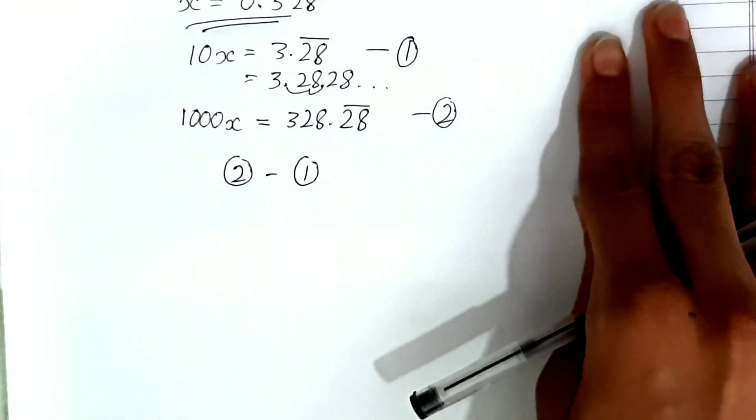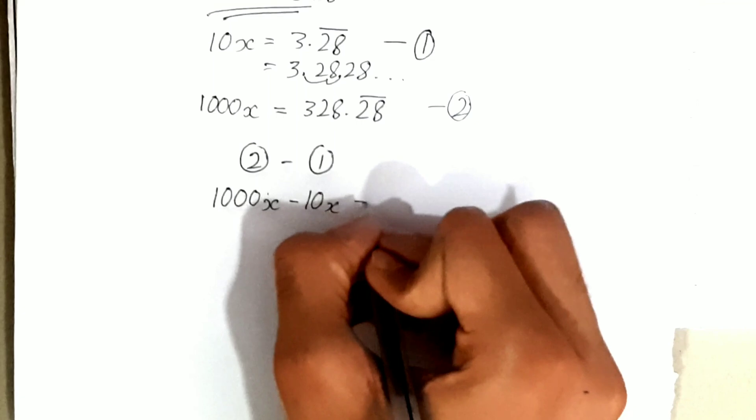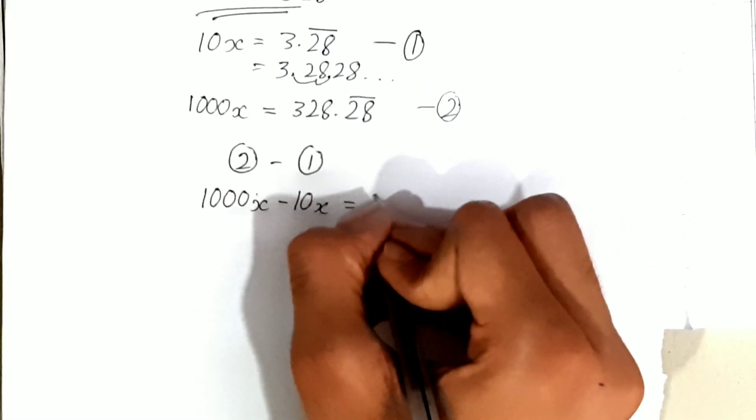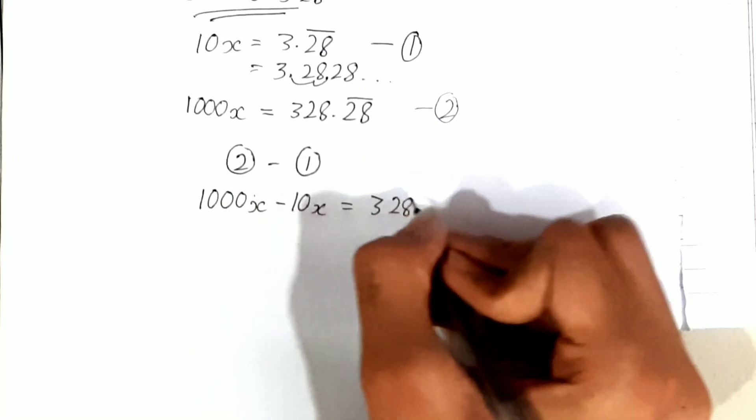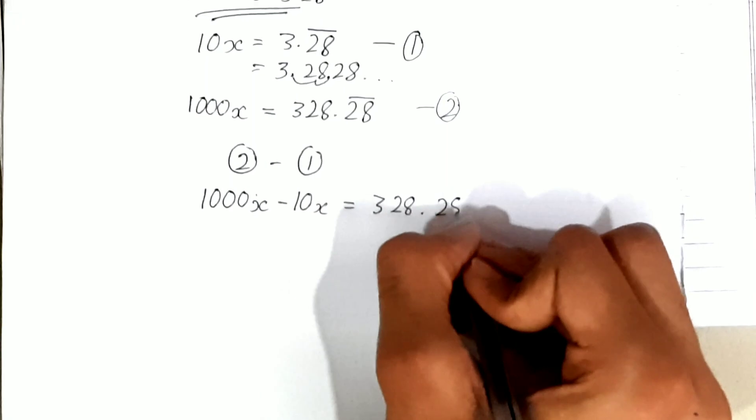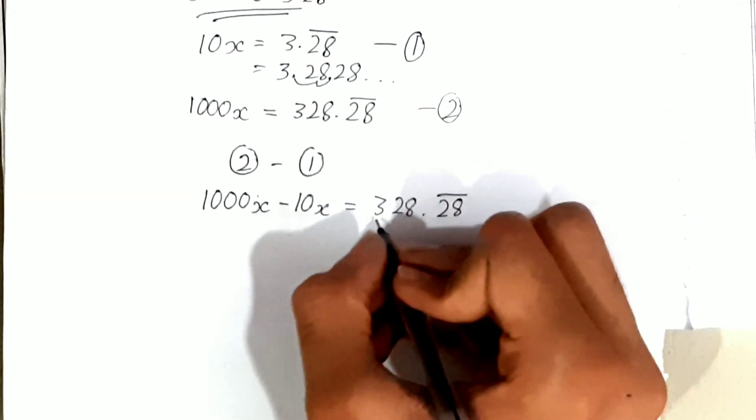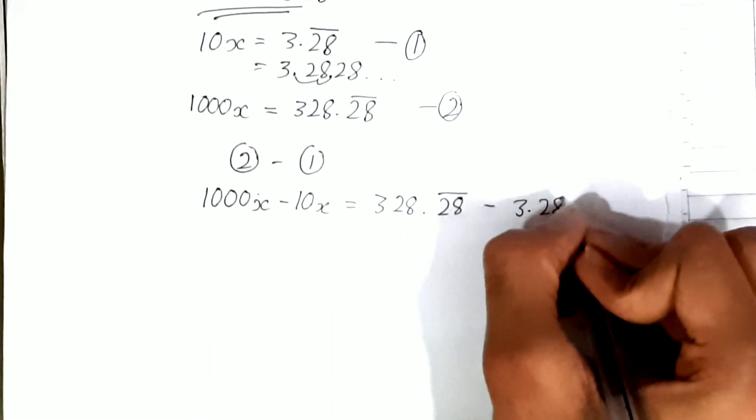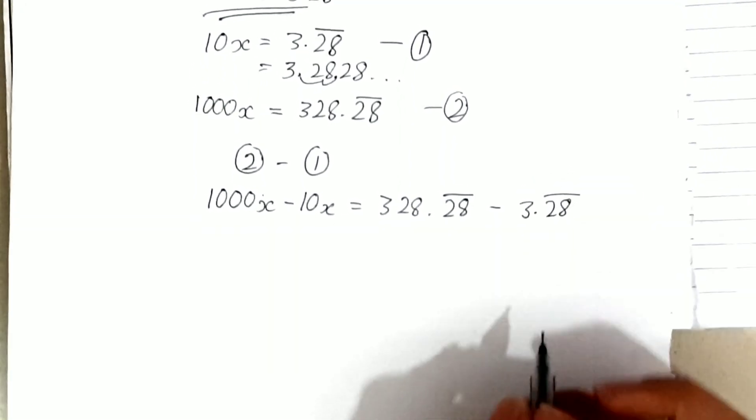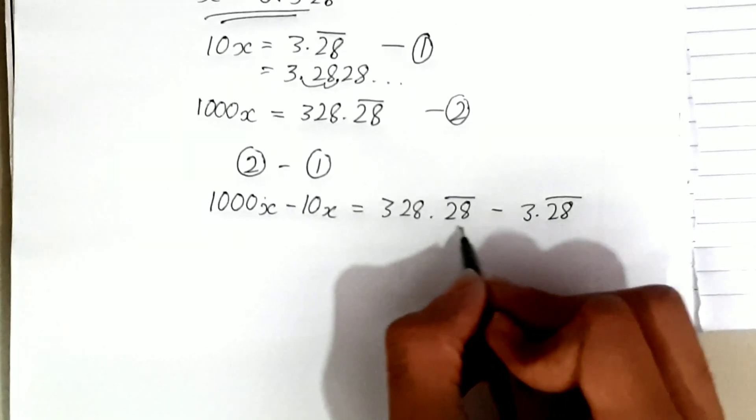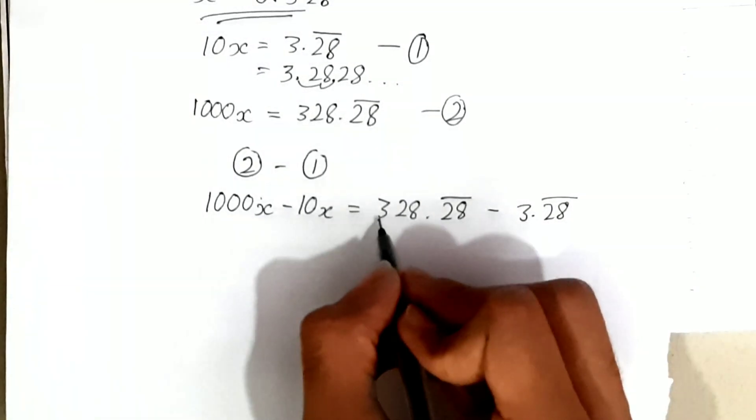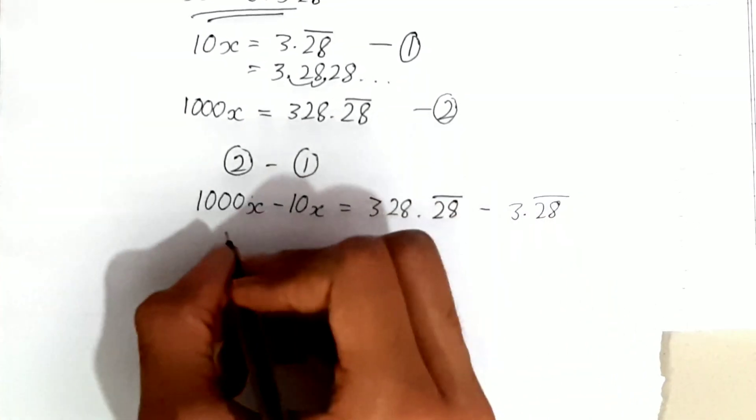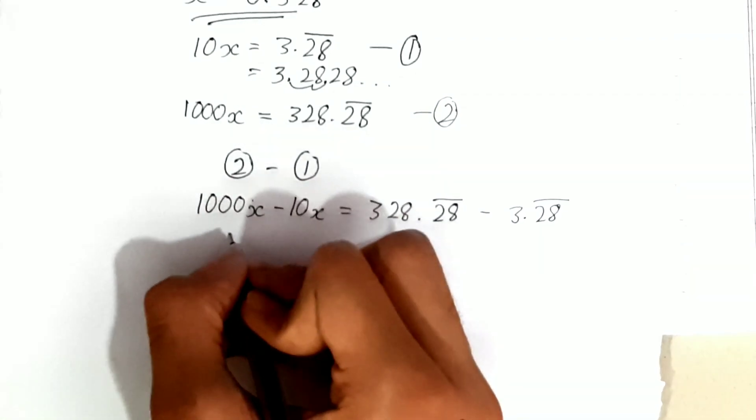So we have 1000x - 10x = 328.2̄8̄ - 3.2̄8̄. The 0.2̄8̄ parts cancel out, so we subtract 3 from 328.